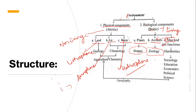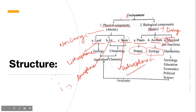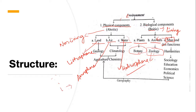Then there is the faunal environment, which includes all the animals — right from microorganisms to the huge elephant. Those who do not make their own food, who are either carnivores or omnivores — all fall under this category. They are only consumers; they only consume food. The members of the plant kingdom are the producers, while animals depend on plants for food and energy.